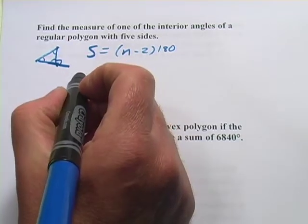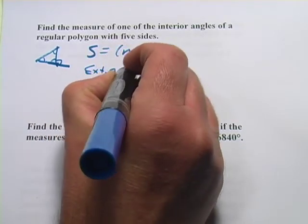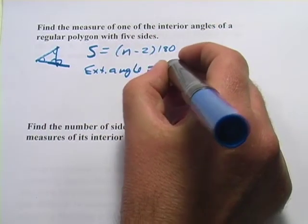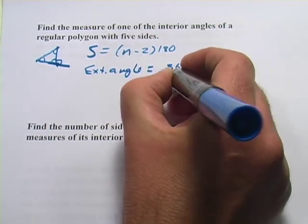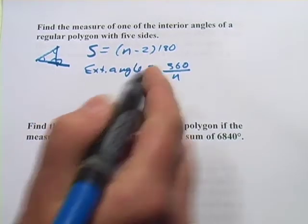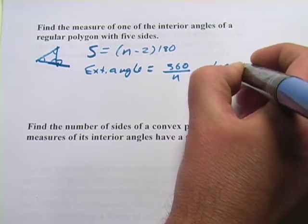and this works with regular polygons. And it's the exterior angle is 360 degrees divided by the number of sides. So, that's all there is to it, and that'll give you an exterior angle. Now, remember, this works with regular polygons.